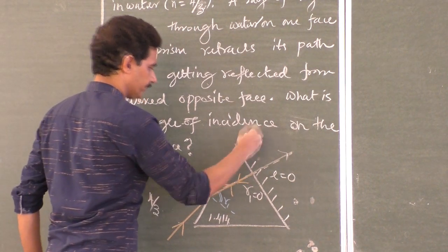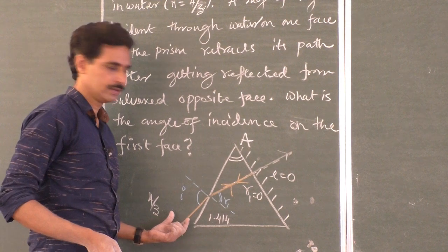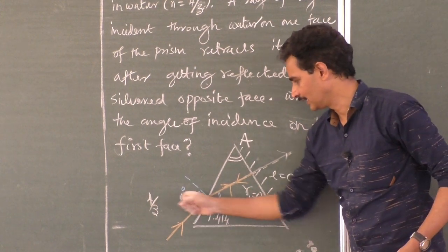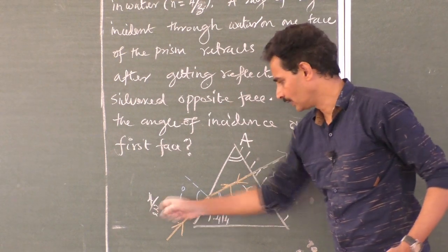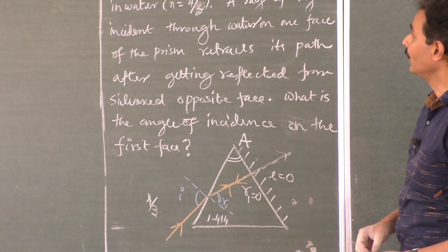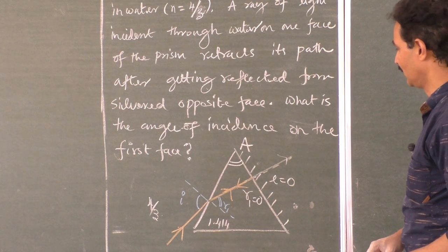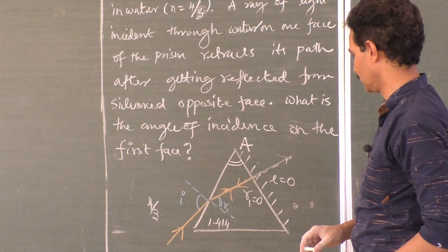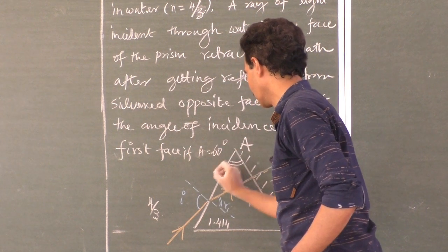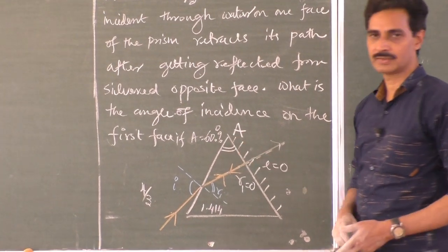Since the angle of emergence e = 0 (normal incidence on the silvered face), and the angle of the prism A = r1 + r2, with r2 = 0, we get r1 = A. The problem must give the angle of the prism — say A = 60 degrees. So for a 60-degree prism kept in water, silvered on the opposite face, what should be the angle of incidence on the first face so that it retraces the path? With r2 = 0, we get r1 = A = 60 degrees.